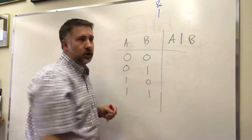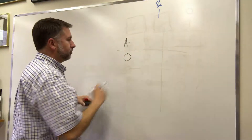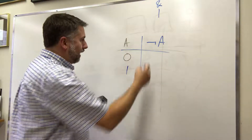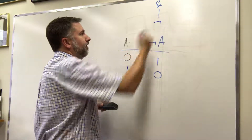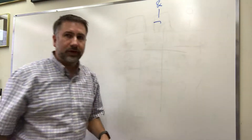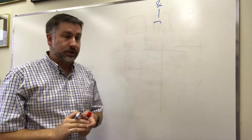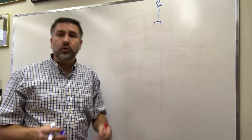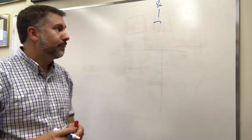NOT is an operation on only one variable. So we have A, and NOT A looks like that — it is just the opposite. If A is 0, NOT A is 1. If A is 1, then NOT A is 0. So those are three common operations on boolean variables. It's worth noting that AND and OR are both binary operations, meaning they have two inputs — two variables that they operate on. NOT is a unary operation, meaning it only operates on a single value.